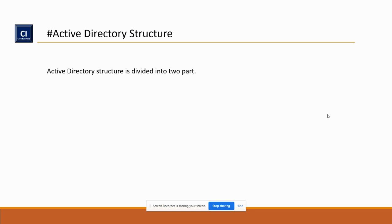There are two types of structure available in Active Directory. One is logical and the other one is physical. Logical is a security boundary — like your forest, domain, child domain, and OU. Physical structure is what we use to manage our logical structure — physical structure includes domain controllers, sites, and services. We'll talk about all the parts one by one.